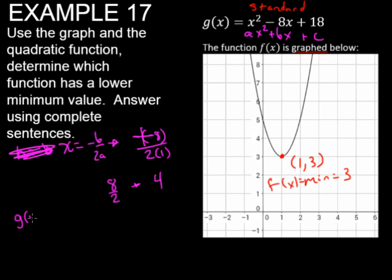So we're going to take g of 4 equals 4 quantity squared minus 8 times 4 plus 18. Simplifying, we start with exponents. 4 squared is 8. Negative 8 times 4 is negative 32 plus 18.